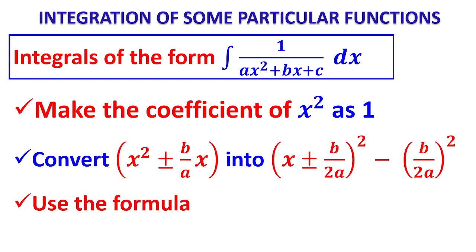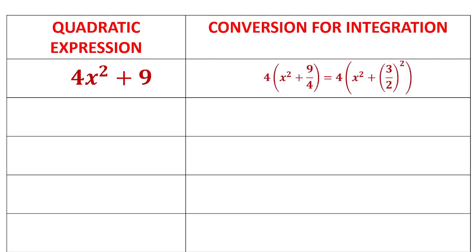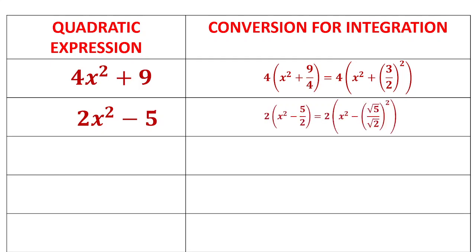Step 1: make the coefficient of x² as 1. Then convert x² + something into (x + something/2)² minus the square of that constant. For example, if the expression is 4x² + 9: take 4 outside → 4(x² + 9/4) → 4(x + 3/2)². We now have x² + a² form. Similarly, if it is 2x² - 5: take 2 outside → 2(x² - 5/2) → 2(x - √(5/2))², giving x² - a² form.